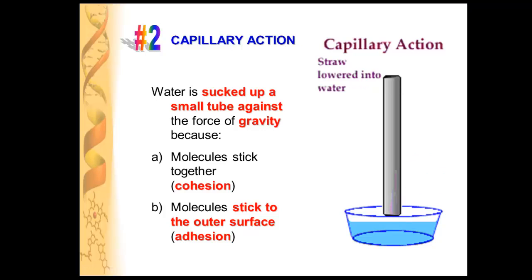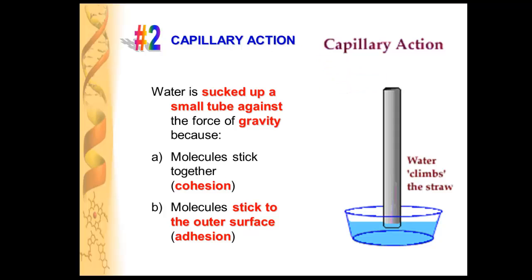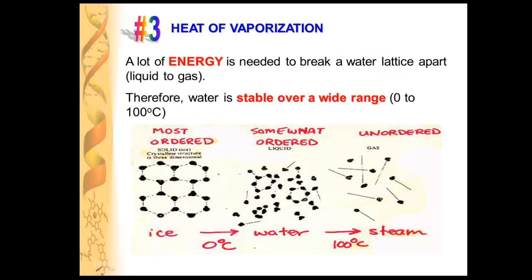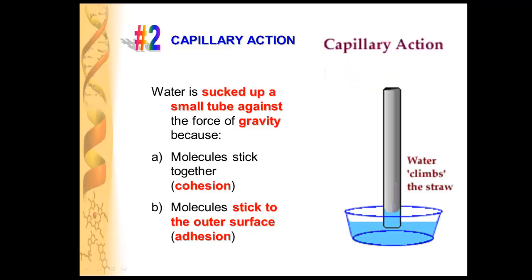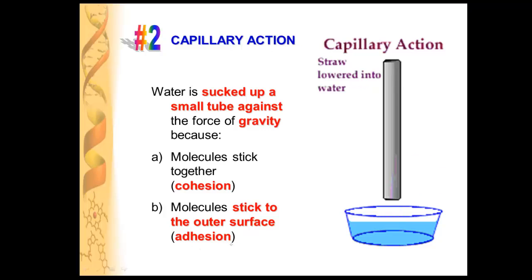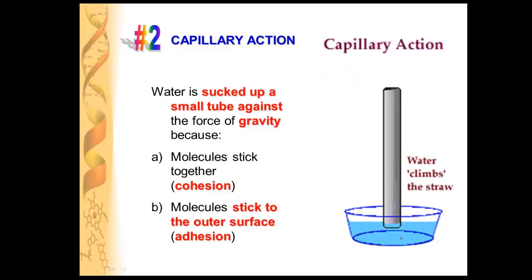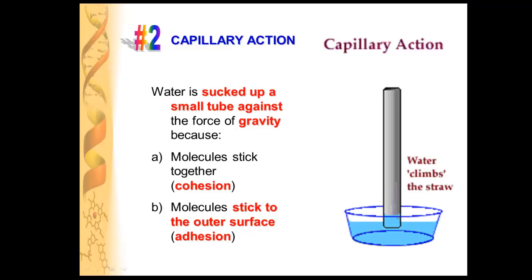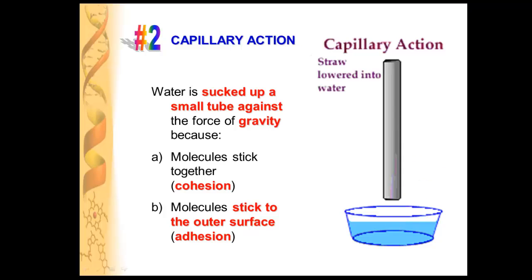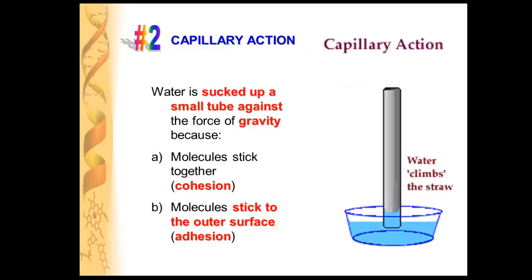The second property we're going to talk about is capillary action — that's when water can get sucked up against gravity. That's due to cohesion because the water molecules are stuck to each other, but it's also due to another property called adhesion. Adhesion is when water sticks to an outer surface. Water is not only stuck to itself pulling other water molecules up behind it, but it's also sticking to the surface of the straw. This is exactly what happens inside a plant when it moves water up from the roots all the way to the leaves.